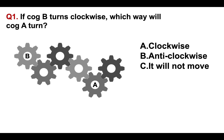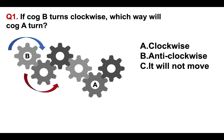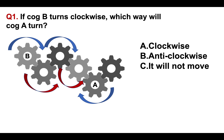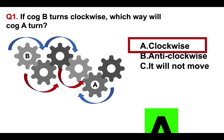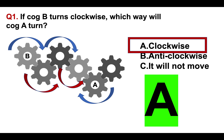Going back to the question: if COG B turns clockwise, which way will COG A turn? All you have to do is visualize in your mind which way the other cogs are turning. The second one is going counterclockwise, the third connecting cog is clockwise, the fourth is counterclockwise, and COG A is going clockwise. So the answer is A.